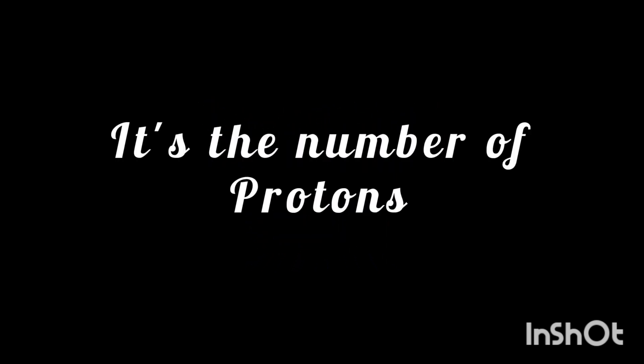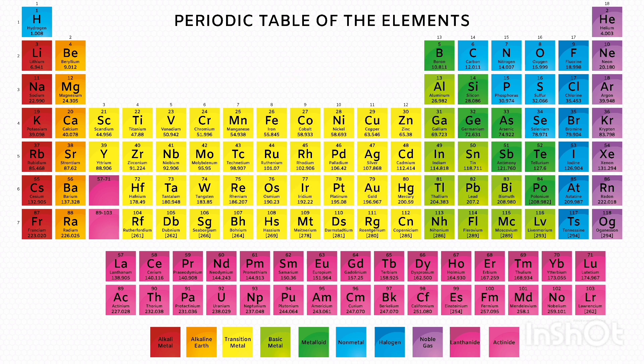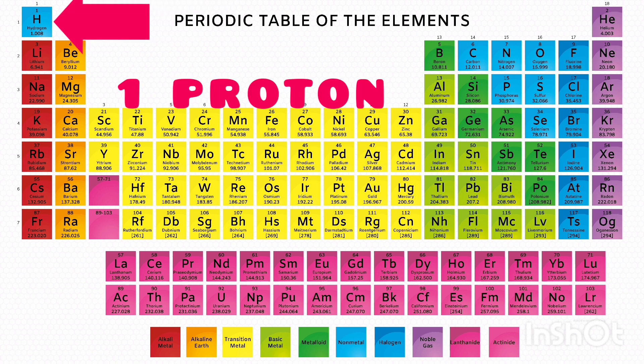For example, it's the number of protons inside the atom that makes each element different. If we look at the periodic table, the first element, hydrogen, has one proton.